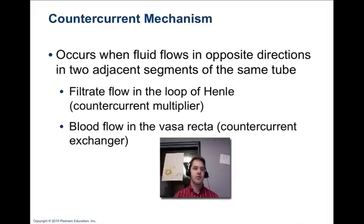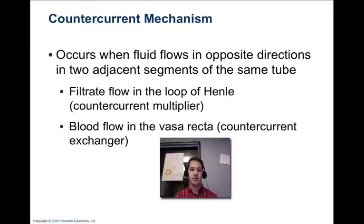One of the critical functions of the kidney is to keep the solute load of body fluids constant by regulating urine concentration and volume. The counter-current mechanism involves an interaction between filtrate flow rate through the loops of Henle in the juxtamedullary nephrons and the flow of blood through the vasa recta. The filtrate flow in the loop of Henle is called the counter-current multiplier, and the blood flow in the vasa recta is the counter-current exchanger.